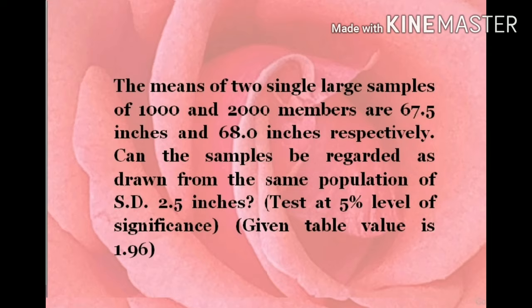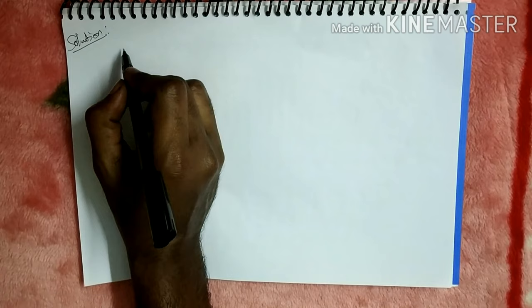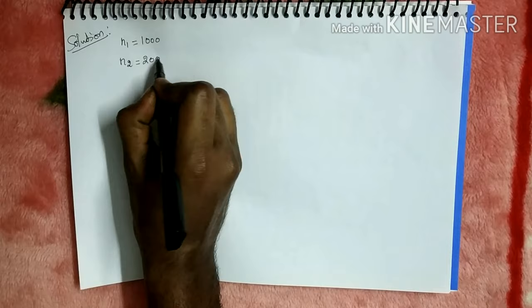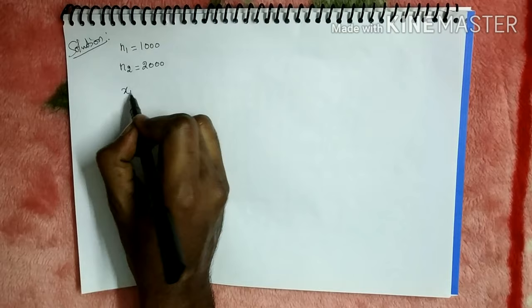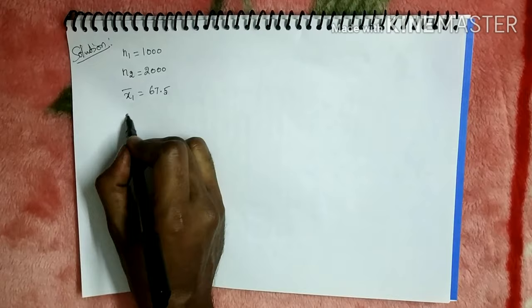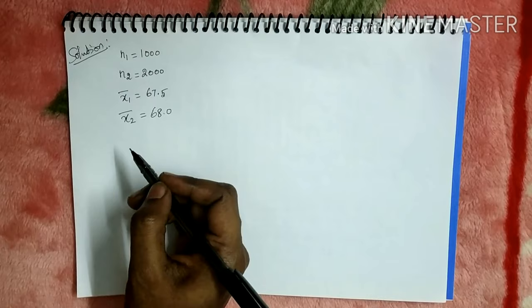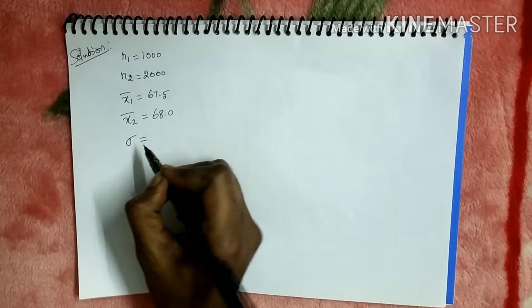The solution: there are two samples. N1, sample 1, is 1000 and N2, sample 2, is 2000. The first sample has mean x1-bar of 67.5. Sample 2 mean x2-bar is 68.0. The population standard deviation sigma is given as 2.5.